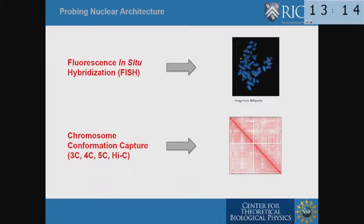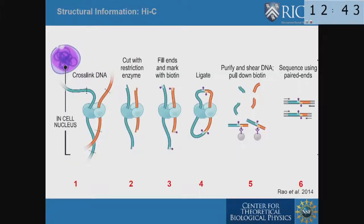The techniques people have been using to understand this problem are two things. One is FISH data — it's an old technique that's getting more popular. The other is chromosome conformational capture, where people are able to measure which parts of the chromosome come together. You measure that by chemical methods, and you get a contact map like the one shown here, where two parts of the chromosome are shown and how likely they are to come together. The darker the color, the more likely that contact is to be formed in the ensemble of structures. One of the main techniques used for that is called Hi-C.